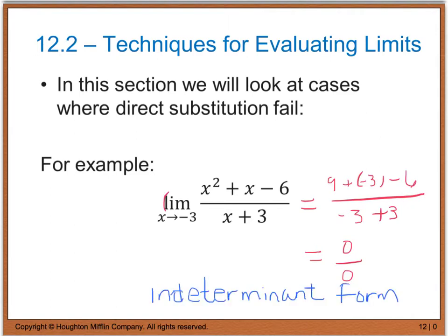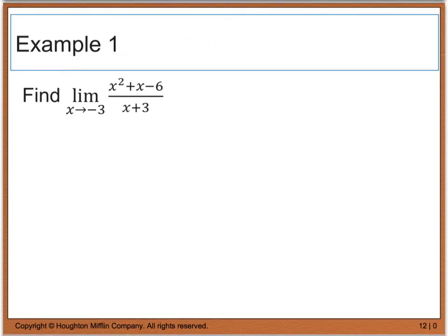So if we go ahead and simplify that, 9 plus negative 3 minus 6 gives me 0, divided by negative 3 plus 3 is also 0. When you get 0 divided by 0, this is what we call the indeterminate form. Anything divided by 0 is undefined, so we can't take the limit of this function as it stands. Now, I'll show you how we'll take the limit here in just one second.